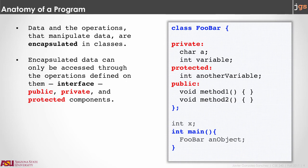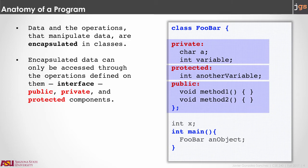As you did in Java, the variables and methods that you encapsulate inside of a class can be private, protected, or public. The only difference is that in Java you specify private, protected, or public for each variable or method. In C++ what you do is create these sections: you put the keyword private followed by a colon, and you can put variables and methods there, and all of them are going to be private until you have another statement — protected or public. In the example, charA and int variable are going to be private, another variable is going to be protected, and the methods method one and method two are going to be public. Usually methods are going to be public — they are called the interface of the class — and variables are going to be private or protected.